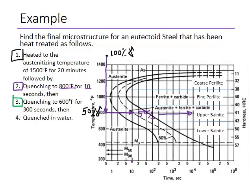In step three we further quench to 600°C and wait 300 seconds — that is approximately this position on the diagram. We achieve a 50% transformation at this temperature, but this 50% applies only to the remaining 50% austenite. So 50% of 50% gives us 25% lower bainite, and we still have 25% austenite remaining.